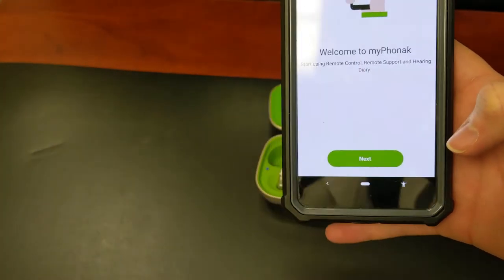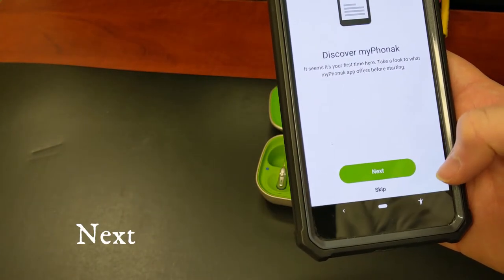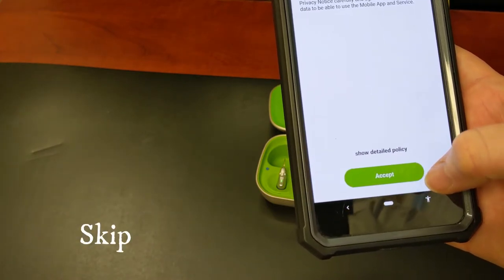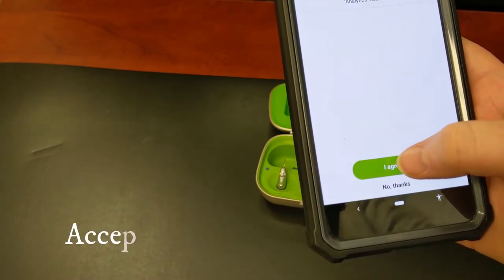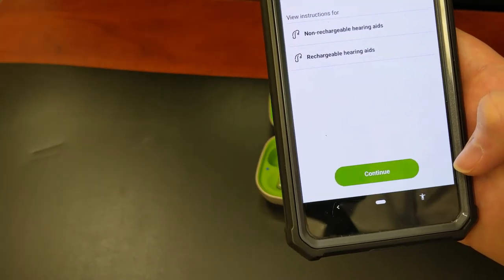On the app there's a couple questions you have to answer on the first time only. So we will tap next, skip, accept, and agree. And now the app is ready to connect to the devices.